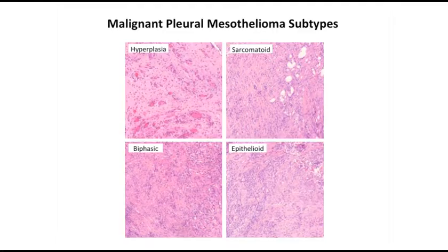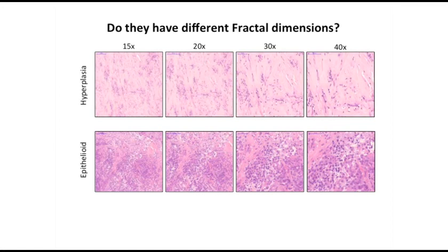Here are some examples of malignant pleural mesothelioma subtypes — for example, hyperplasia, biphasic, sarcomatoid, as well as epithelioid type — and what one can look at are their fractal dimensions at various magnifications under the microscope. This gives one example of 15x, 20x, 30x, and 40x for epithelioid versus hyperplasia. Remember these H&E pictures because we'll come back to that for their analysis.